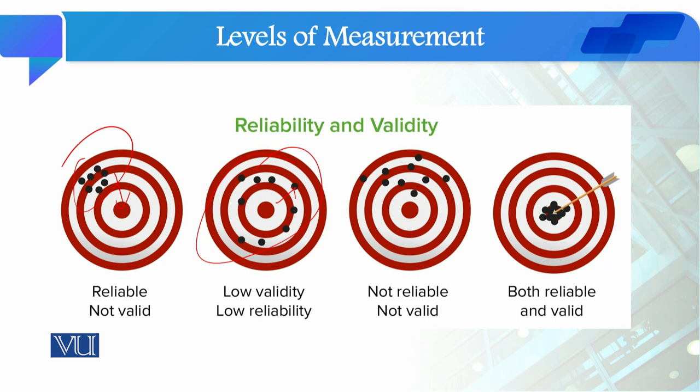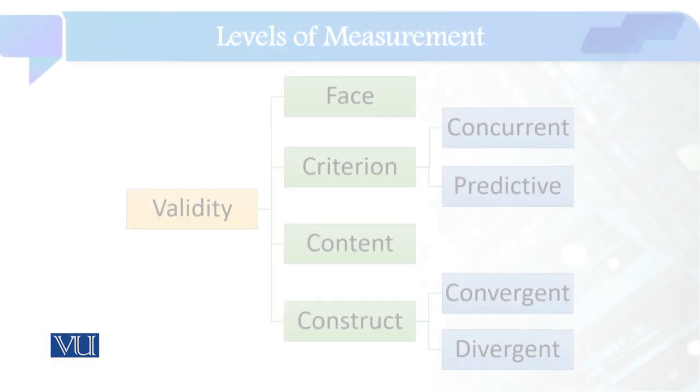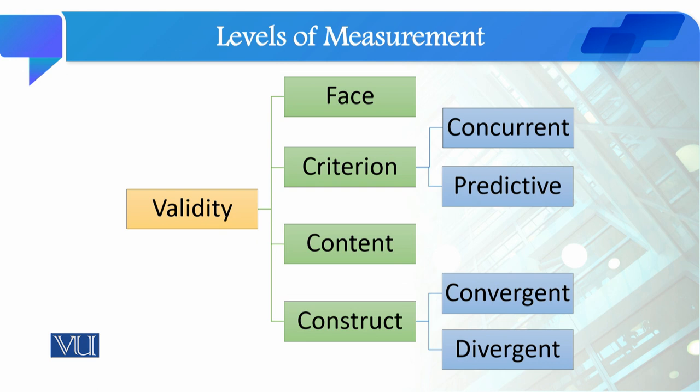ایک scale جو reliable بھی ہے اور valid بھی ہے، یعنی کہ آپ نے جو scale develop کیا وہ scale truthfully آپ کے concept کو measure کر رہا ہے اور اس میں consistency بھی ہے۔ تو ایسے scale کو ہم reliable اور valid scale کہتے ہیں۔ validity کی جب ہم بات کرتے ہیں تو اس کی بھی reliability کی طرح different types ہیں۔